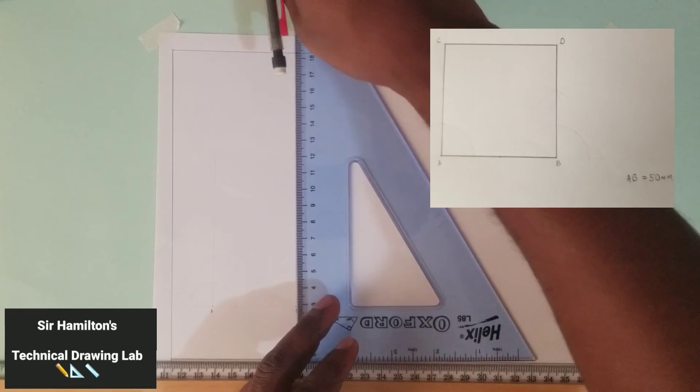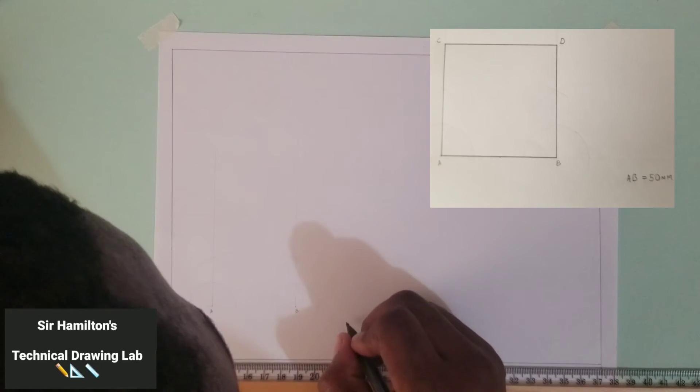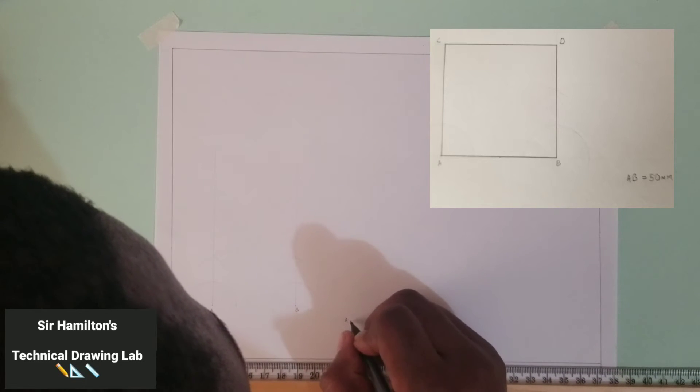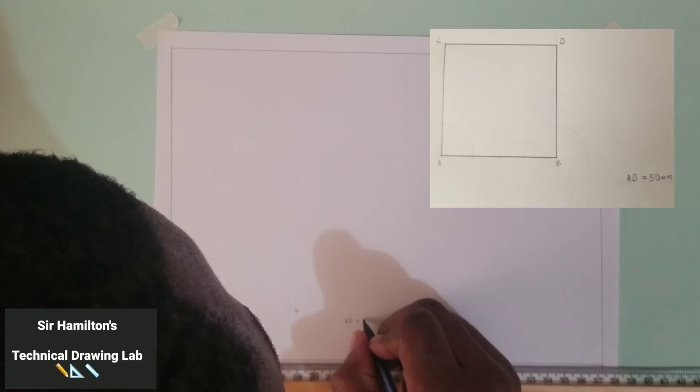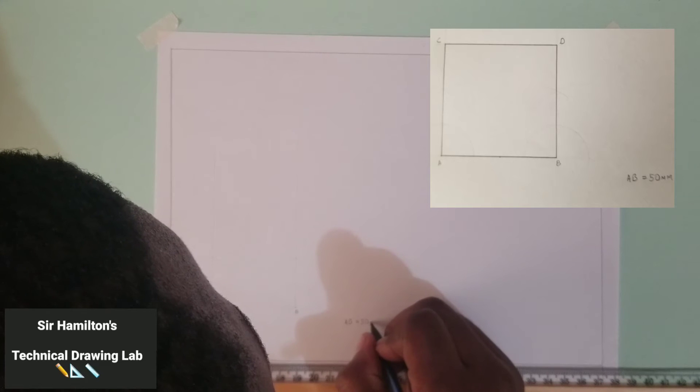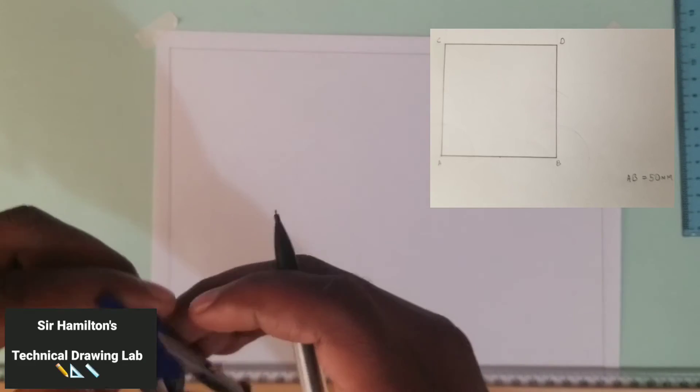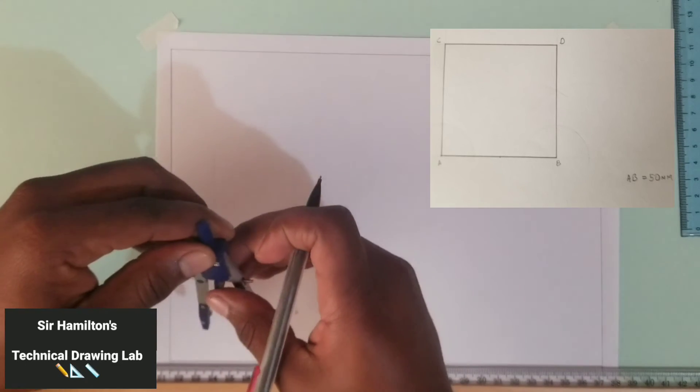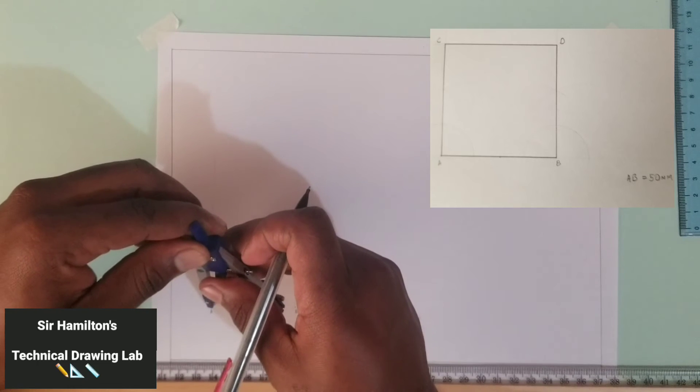All right, now as we can remember, the measurement that we are working with is AB is equal to 50 millimeters. So we are building a square as we said. What we'll be working with is the 50 millimeters from AB.